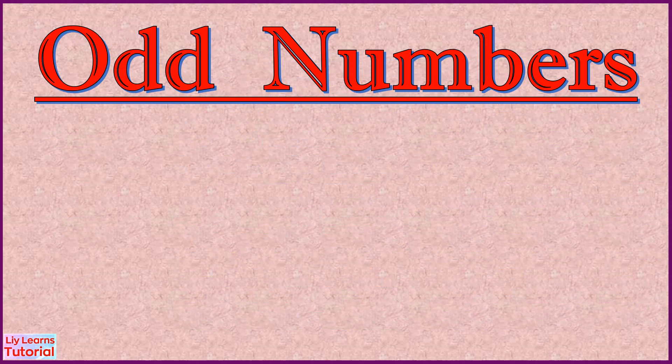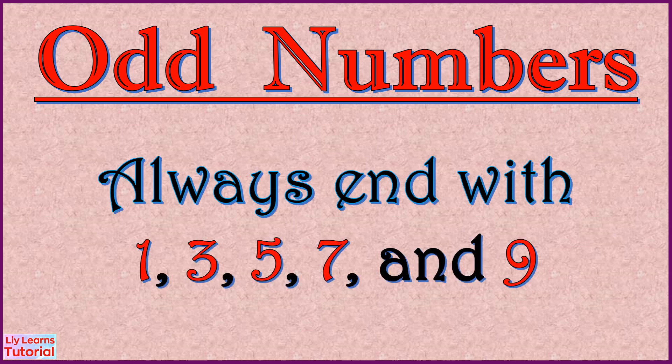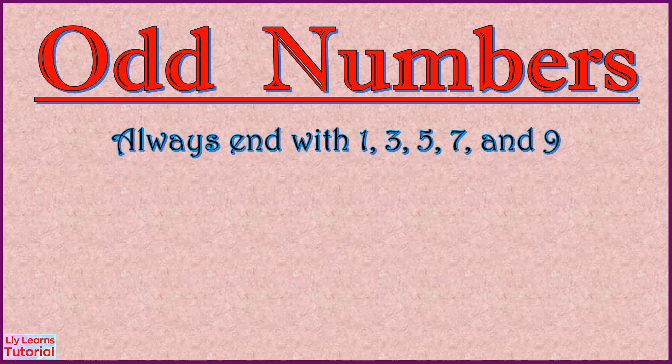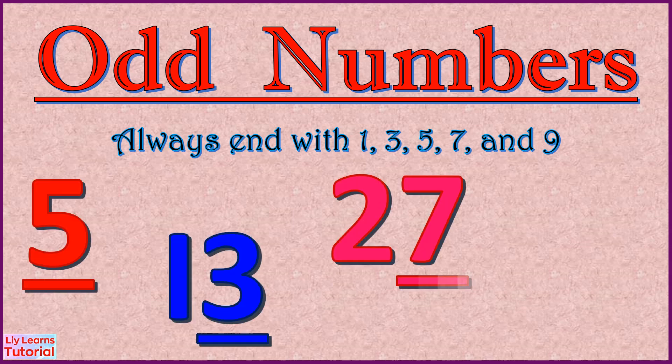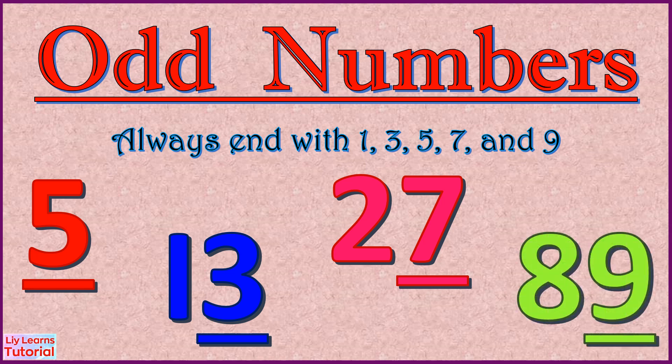Odd numbers always end with one, three, five, seven, and nine. For example: five, thirteen, twenty-seven, eighty-nine.